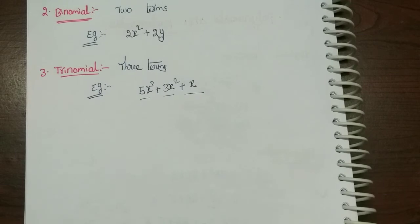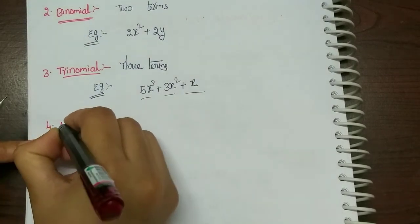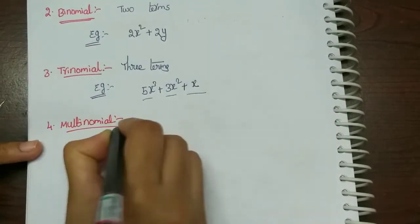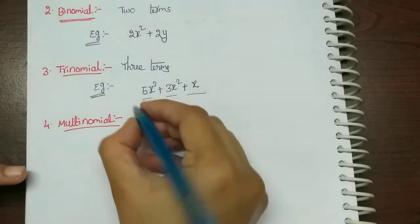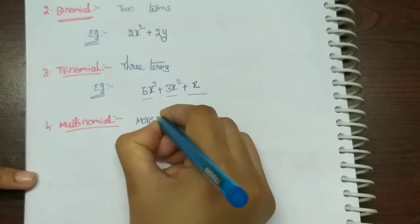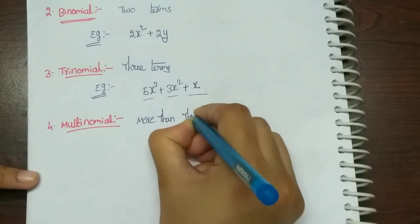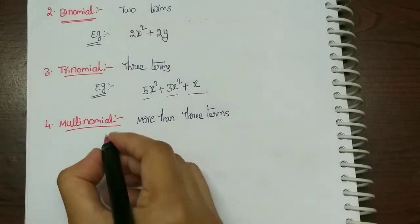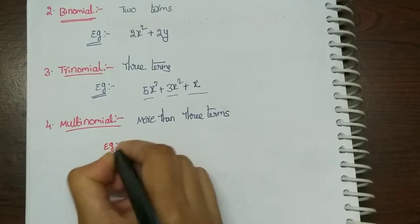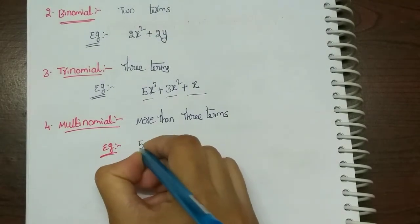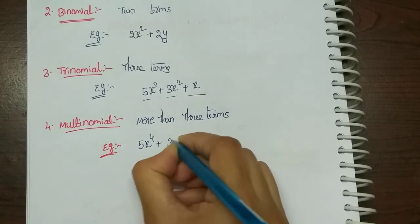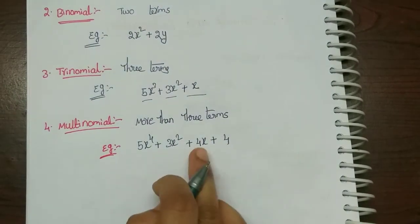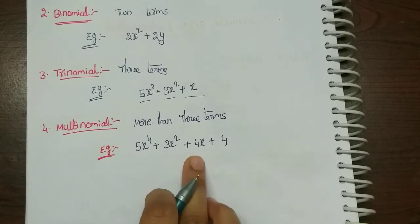Next is multinomial. Multinomial means more than three terms. For example, 5x to the power 4 plus 3x squared plus 4x plus 4 — counting: 1, 2, 3, 4. That is more than three terms, so it is a multinomial.